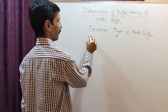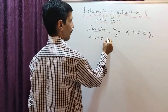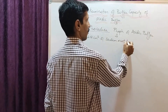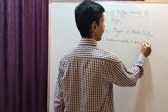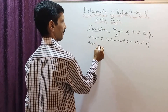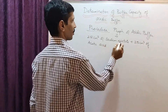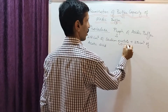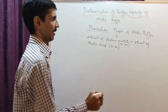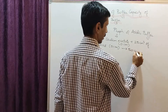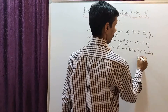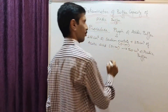Take 25 cm³ of sodium acetate and mix it with 25 cm³ of acetic acid. The concentration of both is 0.1 molar. After mixing, we get 50 cm³ of the acidic buffer.